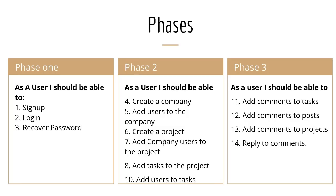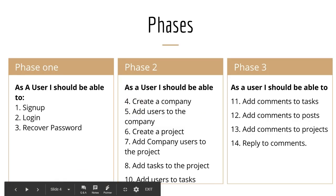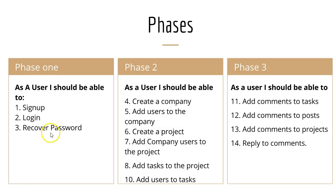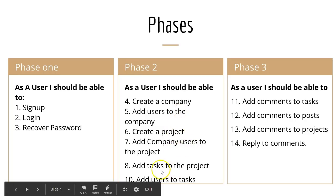I've tried to divide this into three phases using user stories, but this is by no means exhaustive — these are just the key highlights, and as we develop it we'll add and remove some. Phase one is when we complete sign-up, login, and recover password, involving user and admin roles. Phase two is where we give the user the ability to create a company, add users to the company, create a project, add company users and tasks to the project, and add users to tasks. Phase three will be basically about comments, making sure that everything can take comments.